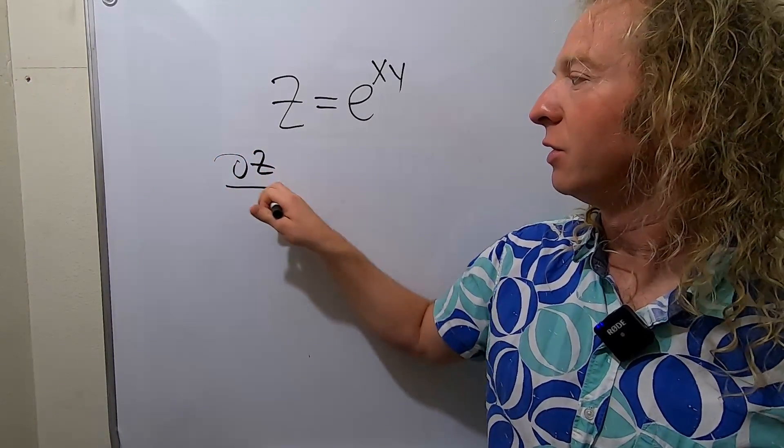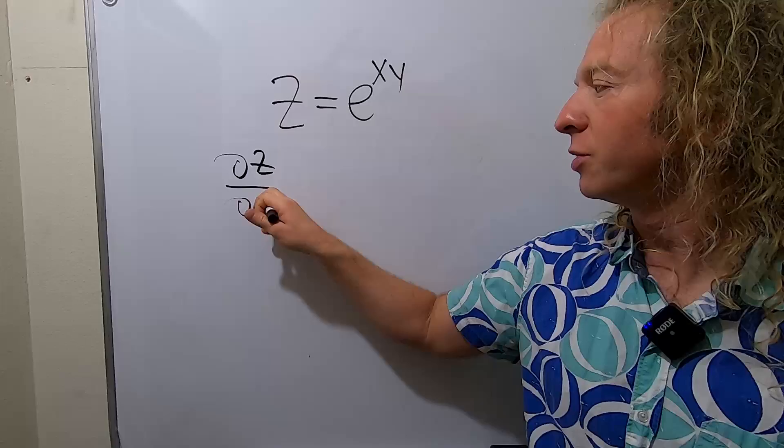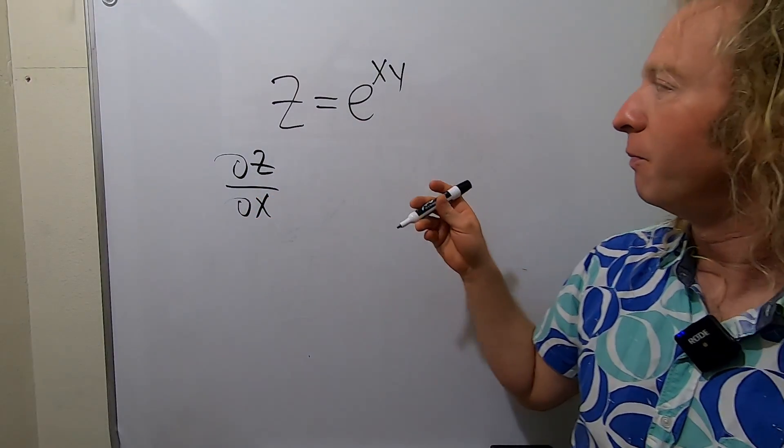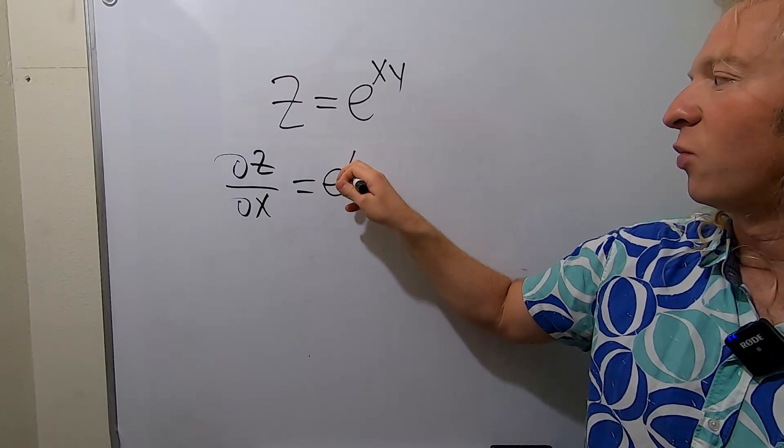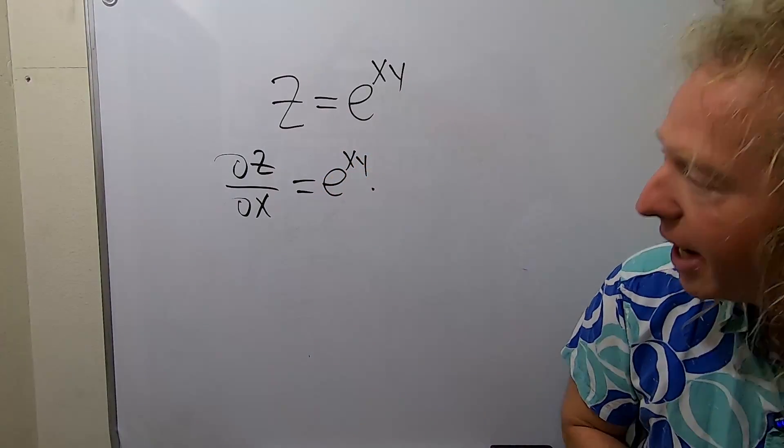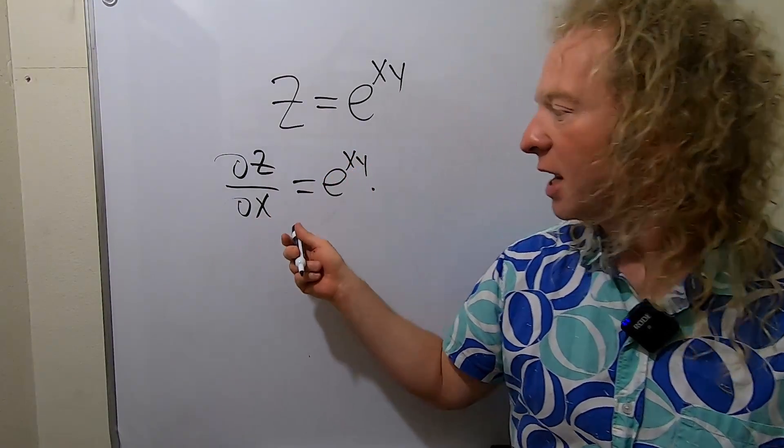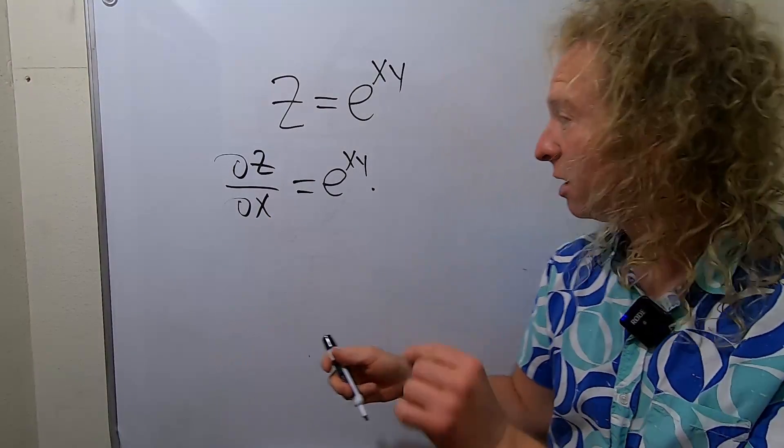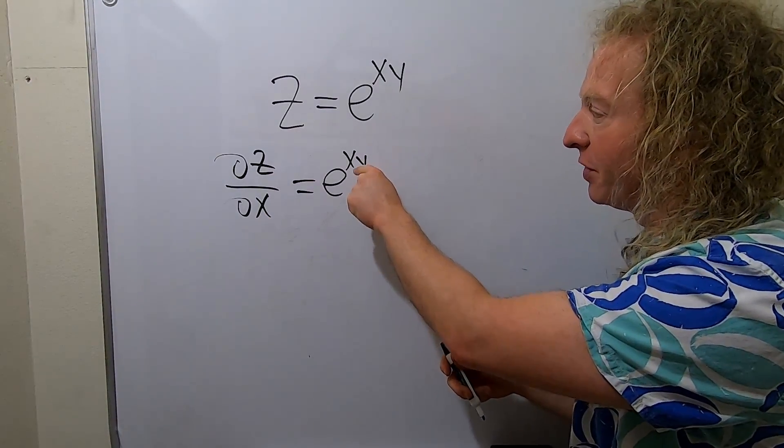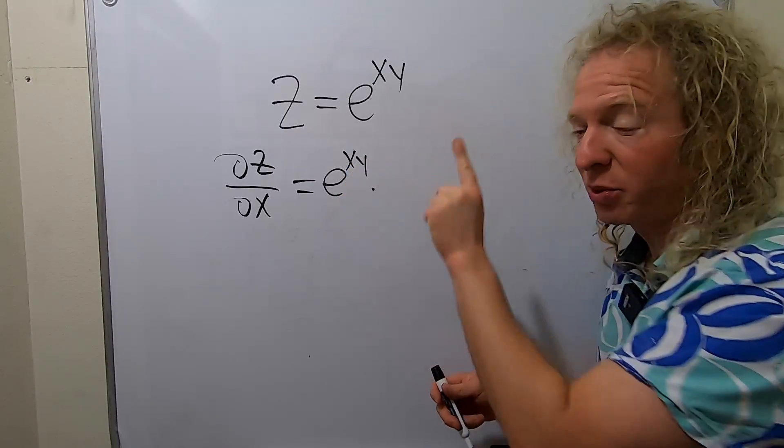So ∂z/∂x. When you're taking this partial, remember the derivative of e^x is e^x. So you just get e^(xy) times the derivative of the inside. Now when we're computing a partial derivative with respect to x, y is a constant. So you have to pretend this is a constant. The derivative of x is 1, so we just get y.